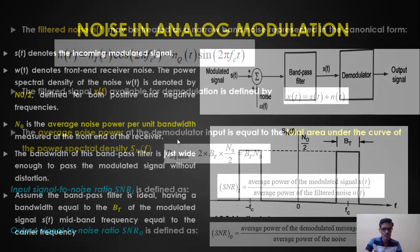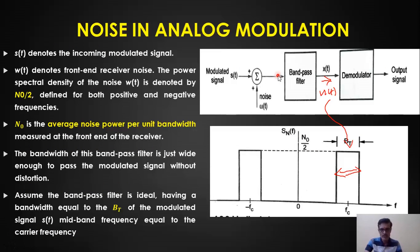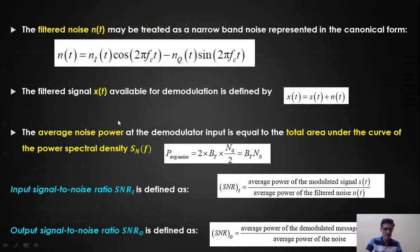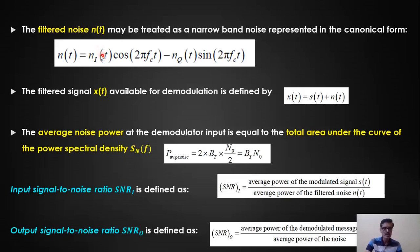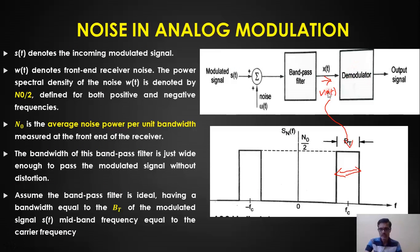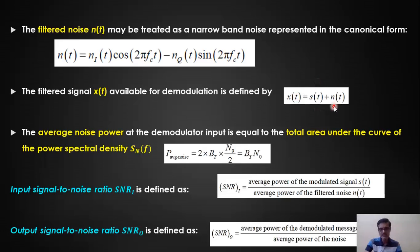Before analyzing noise performance, note that the filtered noise is a bandpass signal and can be represented using in-phase and quadrature components: n(t) = nᵢ(t)cos(2πfct) − nq(t)sin(2πfct). This filtered noise n(t), along with the modulated signal s(t), gives x(t) = s(t) + n(t) as the input for the demodulator.